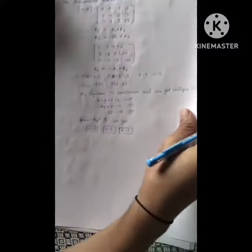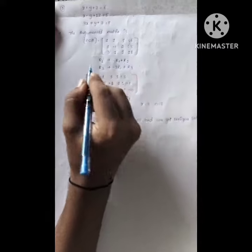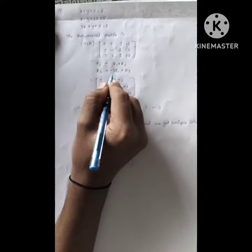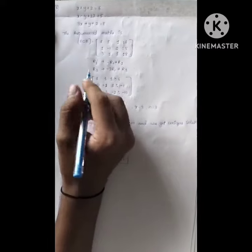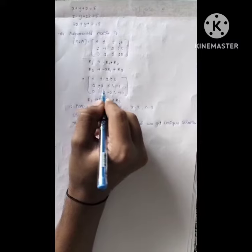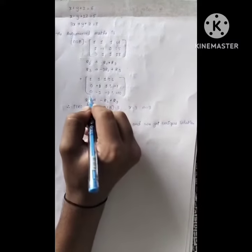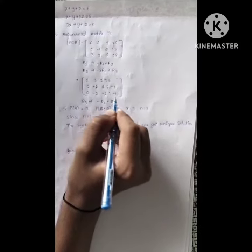We have to do a row transformation here, that is r2 becomes minus r1 plus r2, r3 becomes minus 3 times r1 plus r3. The equation becomes 1, 1, 1 is to 6, and the second row becomes 0 minus 2, 1 is to minus 1, and the third row becomes 0 minus 2, minus 2 is to minus 10.